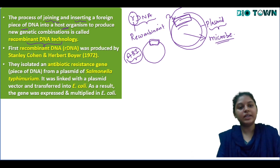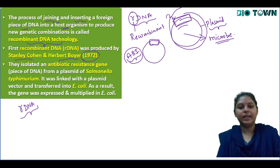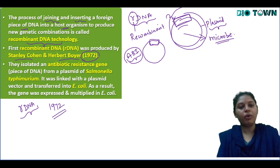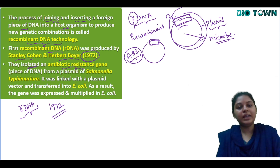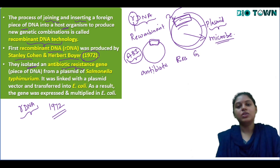The first recombinant DNA was produced by Stanley Cohen and Herbert Boyer in the year 1972. What they did was isolate an antibiotic-resistant gene.